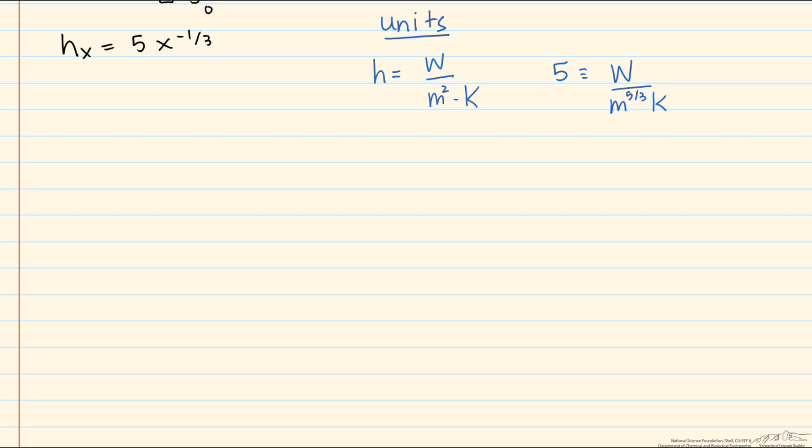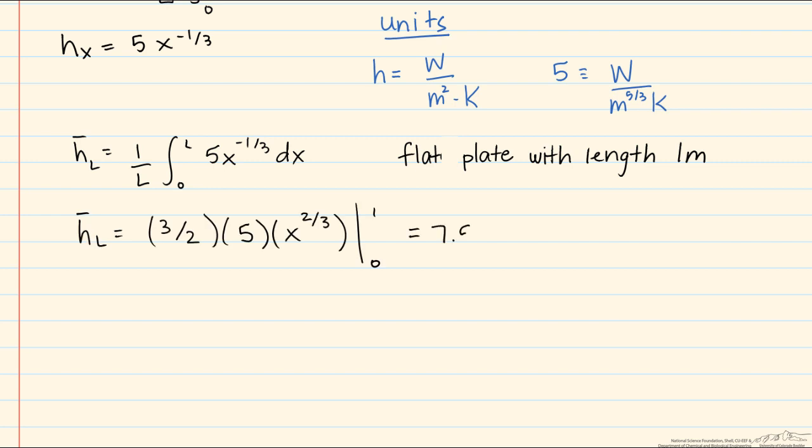So now let's find the average heat transfer coefficient. h-bar_L is going to equal 1 over L times the integral from 0 to L of 5 times x to the minus 1/3 dx. And in this case, we're going to say that we have a flat plate that is 1 meter long. So this is just going to be equal to 7.5 watts per meter squared Kelvin. So here's our average heat transfer coefficient.